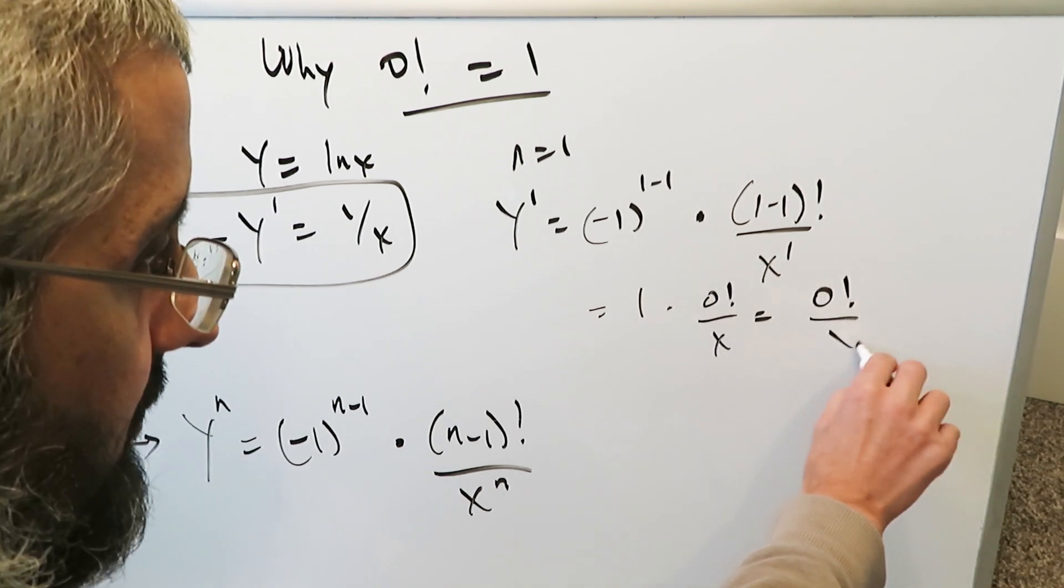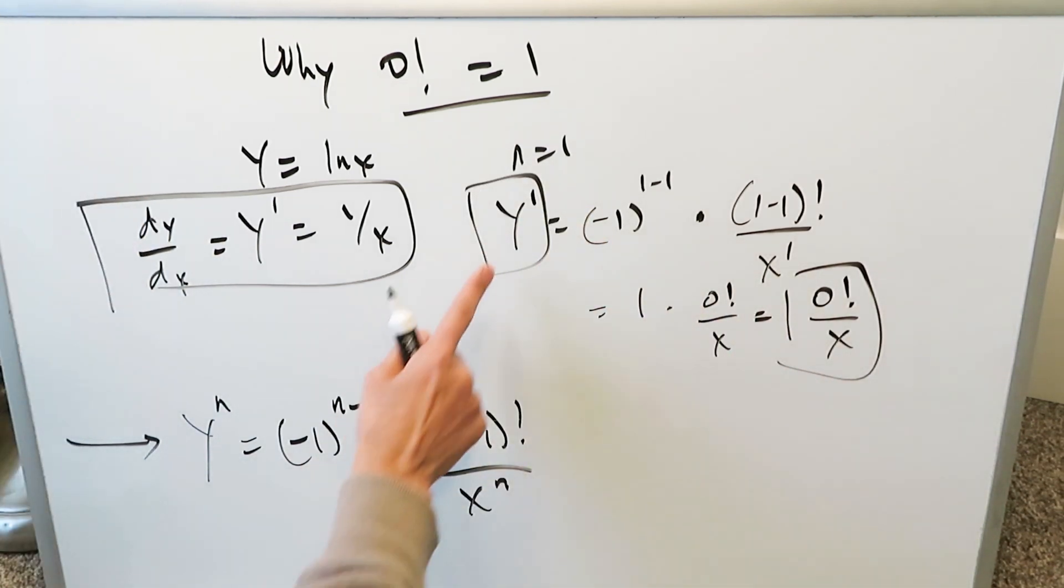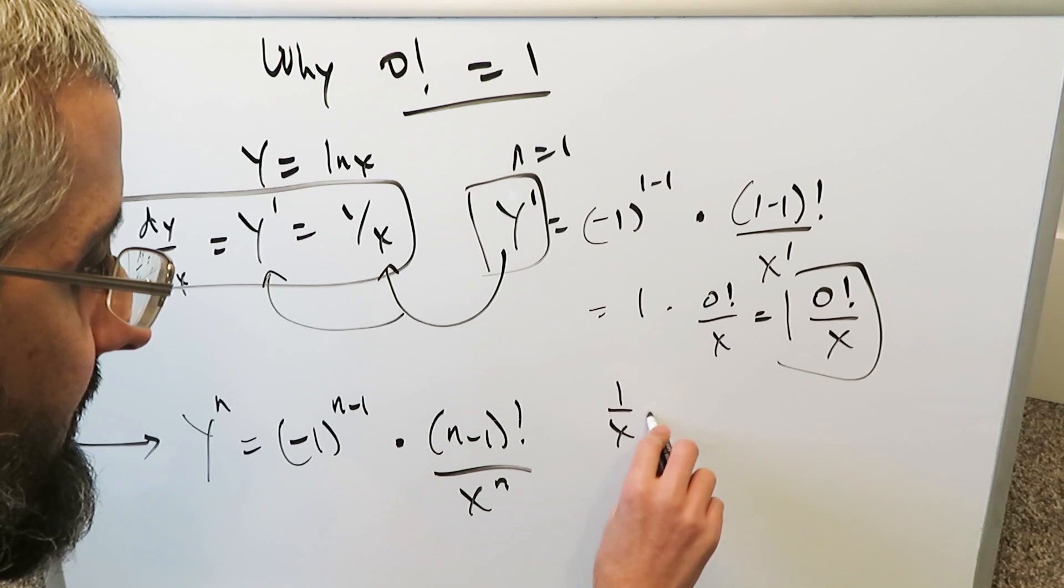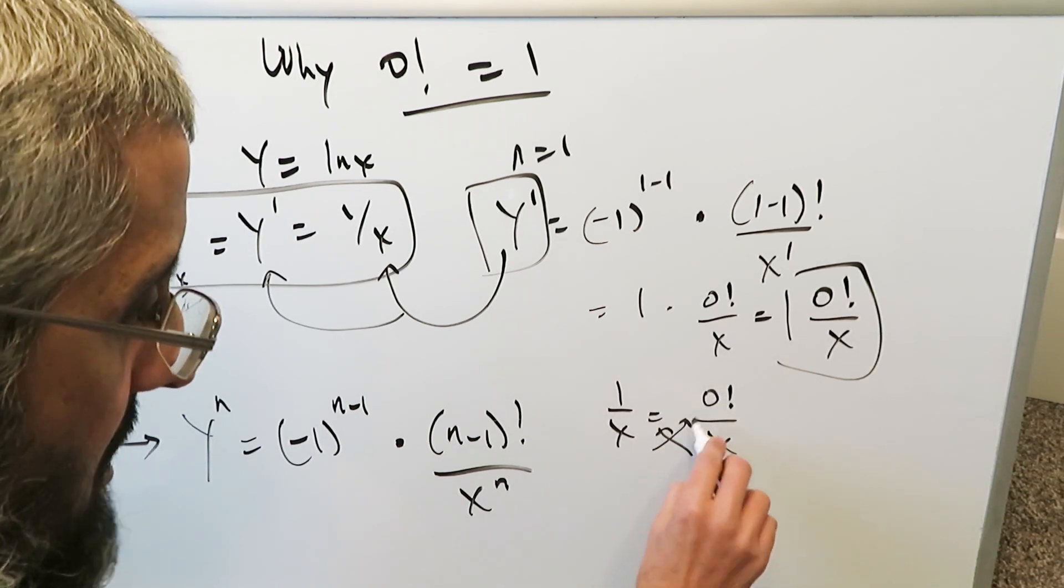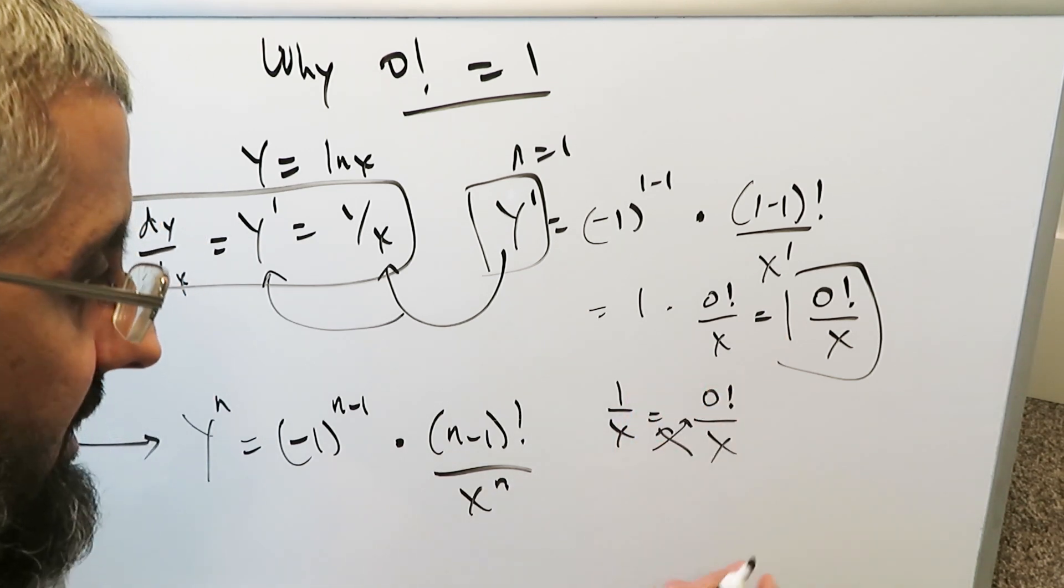This is what I've established, that this is equal to that. But I know this right here is also equal to this. And you make them equal to each other. You'll have 1 over x is equal to 0 factorial over x. Cross multiply, or you don't even have to cross multiply, you can just read this right out.